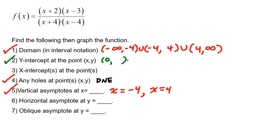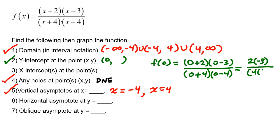So in order to find the point where the function would cross the y-axis, all we need to do is evaluate f of 0. So plugging 0 in wherever there's an x in my original given function, like so. And then simplifying, we have in the top, we have 2 times negative 3, and in the bottom, we have 4 times negative 4.